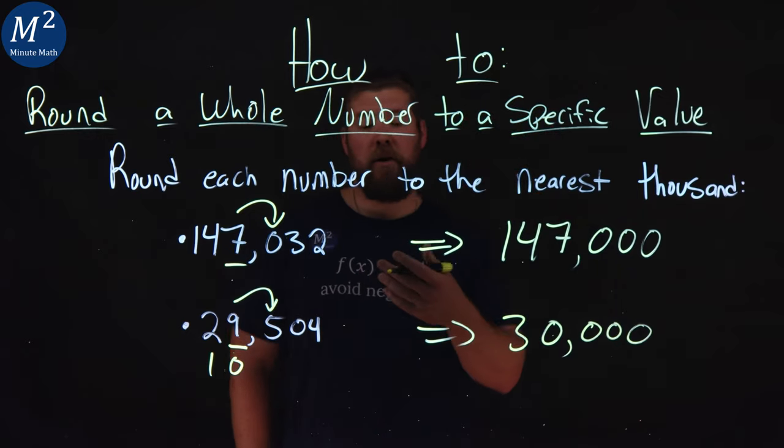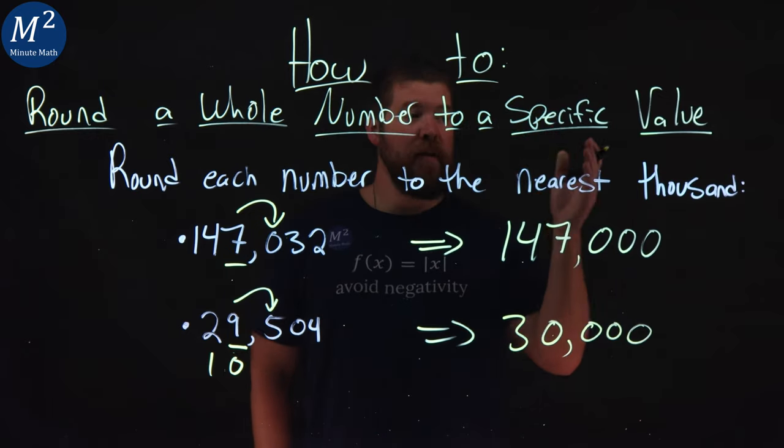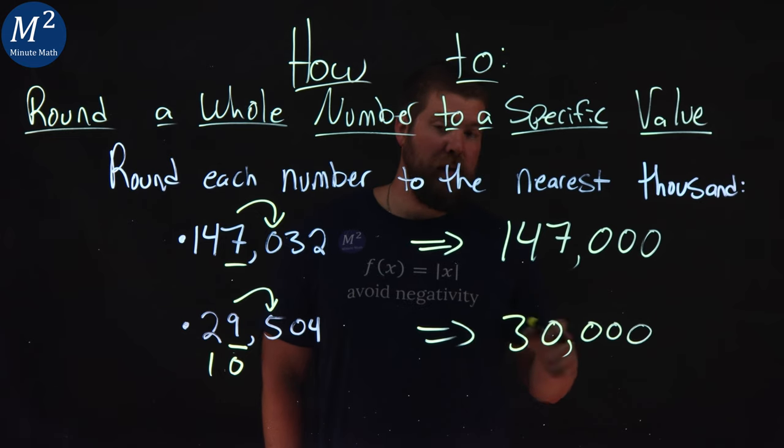And so 29,504 rounded to the nearest thousand is 30,000.